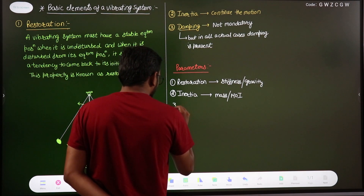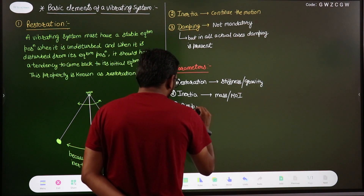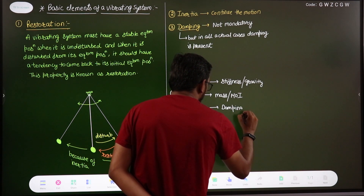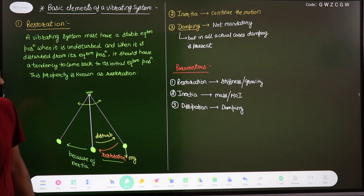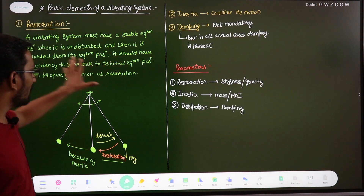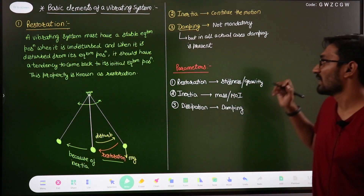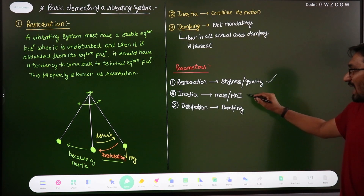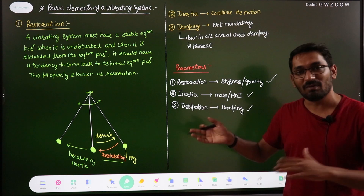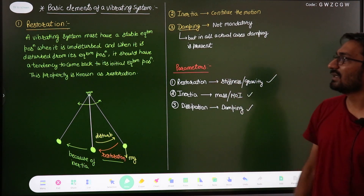Dissipation is not mandatory but is always present. Damping is basically of two types: viscous damping and Coulomb damping. Damping will be present in all practical situations. So wherever you see a vibrating system, it must have some restoration, some inertia, and it may have some dissipation. Without dissipation a system can still vibrate, as we will see in free vibration, but you cannot neglect dissipation in practice.